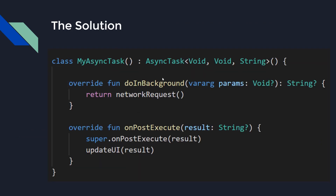To solve this problem we may use an AsyncTask, which is used to asynchronously run a block of code. Here you can see we have two functions: doInBackground and onPostExecute. Inside doInBackground we perform the network operation, and inside onPostExecute we update the UI. The solution is complicated but it works.